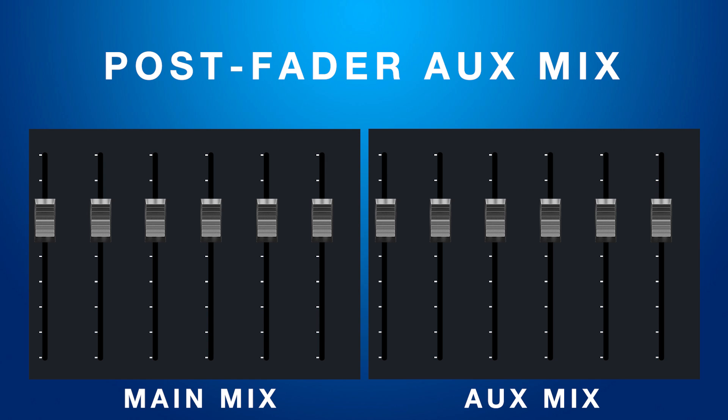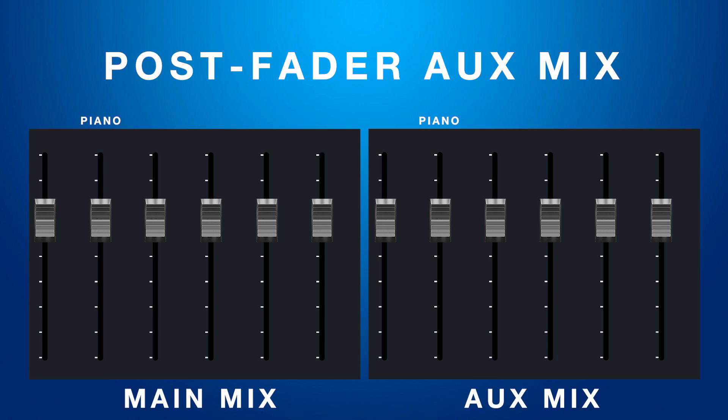Number two is the post-fader aux mix. Another way to mix your live stream audio is using a post-fader aux mix out of your mixer. A post-fade aux mix is when the level going to your live stream is connected to the physical faders of the channels. For example, if you turn up the snare microphone in the mains, it will turn it up in your aux mix. What this allows you to do is make adjustments based on how your main mix responds to your room — for instance, setting the piano 3dB lower than all of the other channels in that live stream aux mix. This type of mixing can be beneficial when you don't have any additional people to mix your live stream.